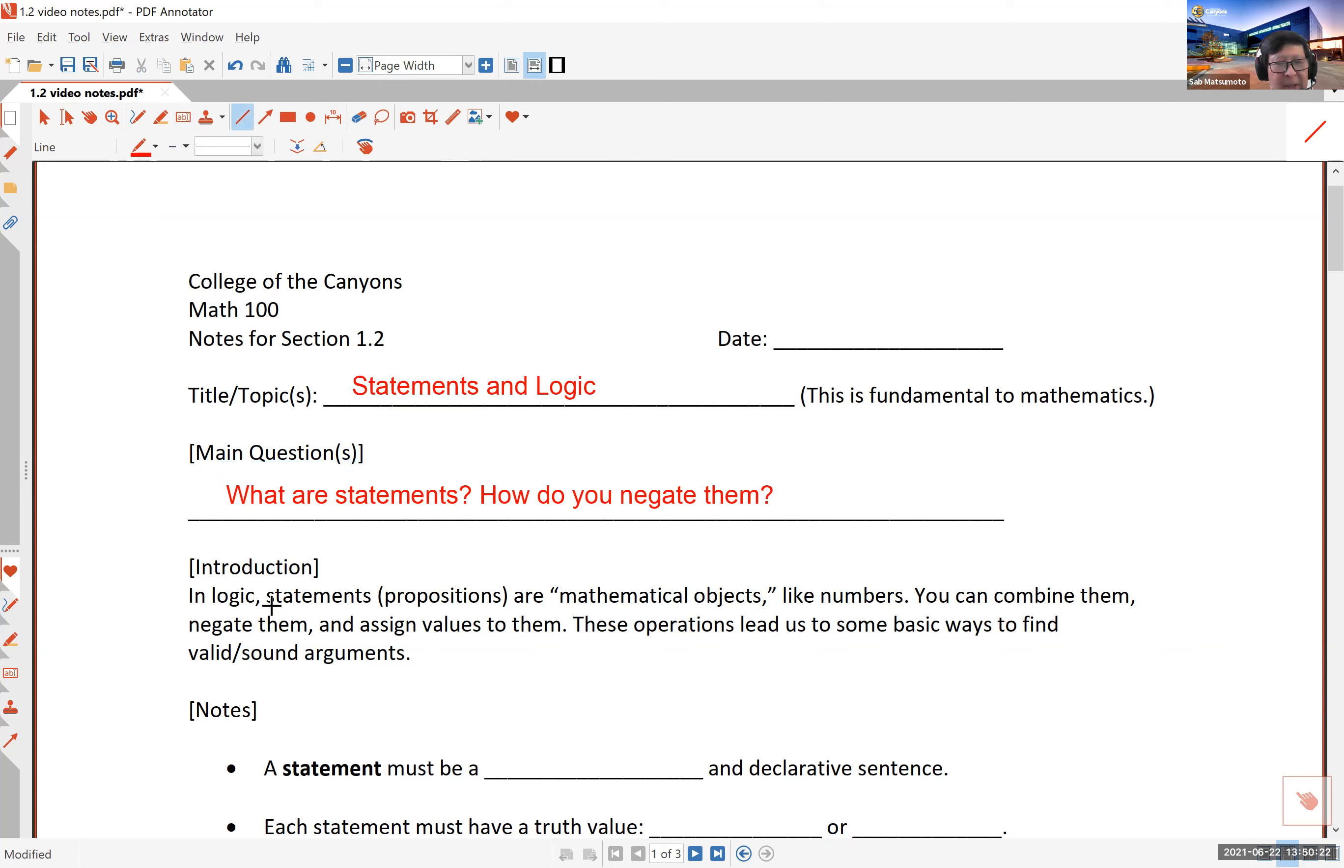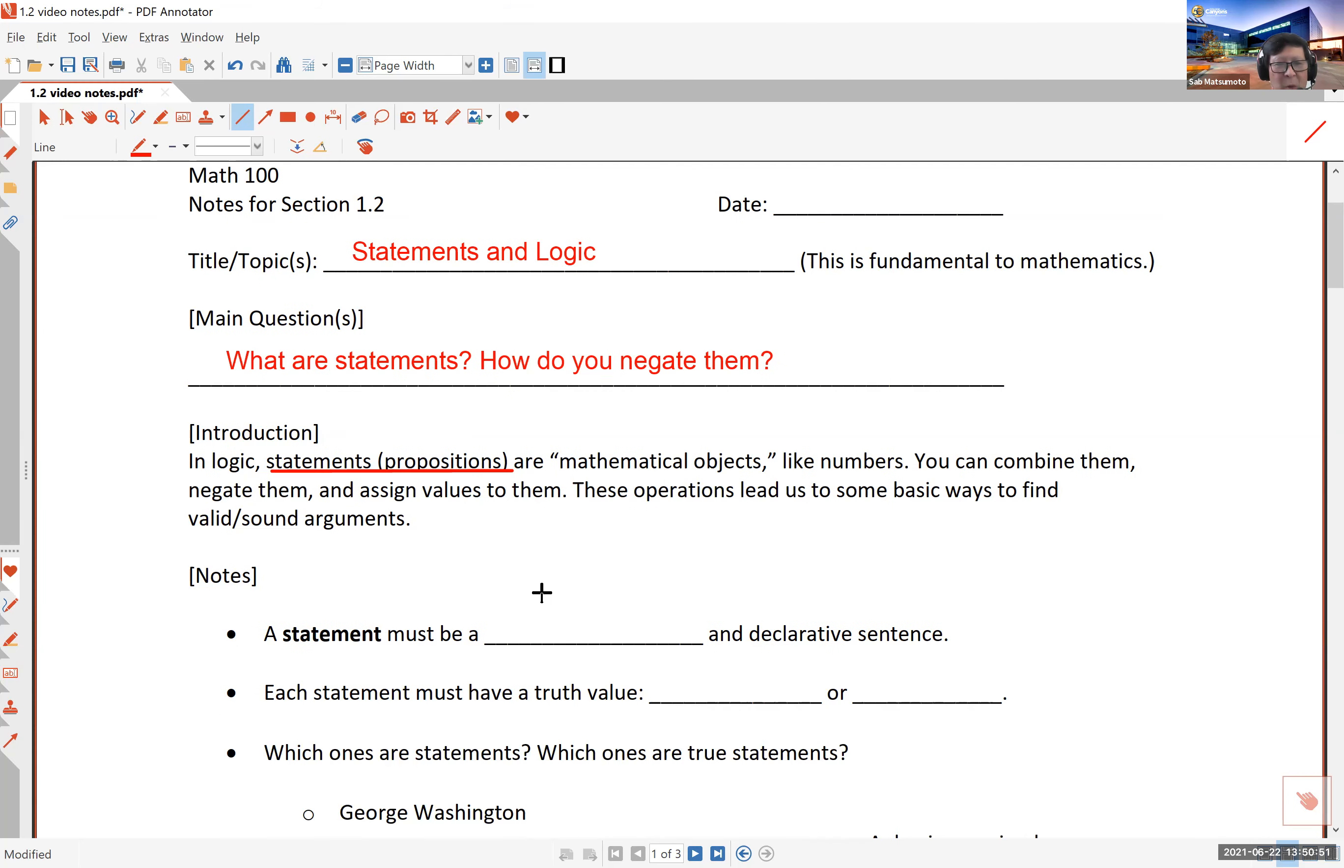So in logic, statements, sometimes called propositions, are mathematical objects like numbers. If you have numbers, you can add them. You can subtract them. You can put a negative number in front of it and so on. You can assign values to numbers. And so those operations, once you do these operations on propositions or statements, will lead us to some basic ways to find what's true, what's right, and what sound arguments are. So remember, you should be filling these blanks in as we cover these.